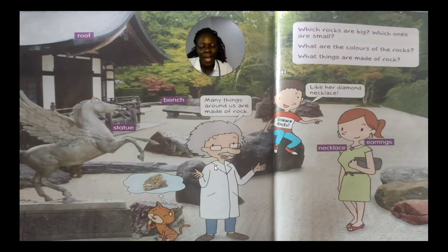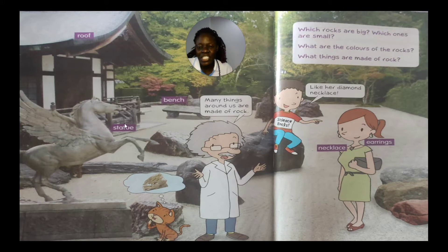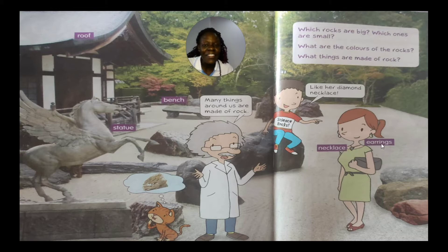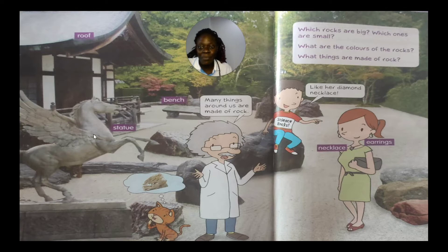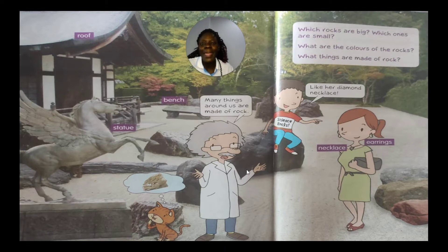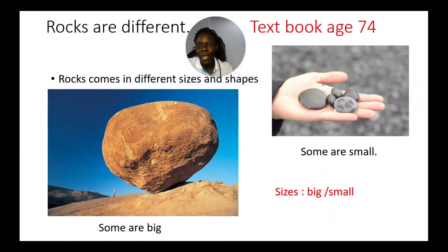Looking at this picture, we have Dr. Atom and Zoe. Which rocks are big, which ones are small? We have big rocks and small rocks. Things made from rocks include: a statue, a roof, a bench, necklaces and earrings. A necklace goes on your neck, and earrings you wear on your ears — some necklaces are made out of rocks.